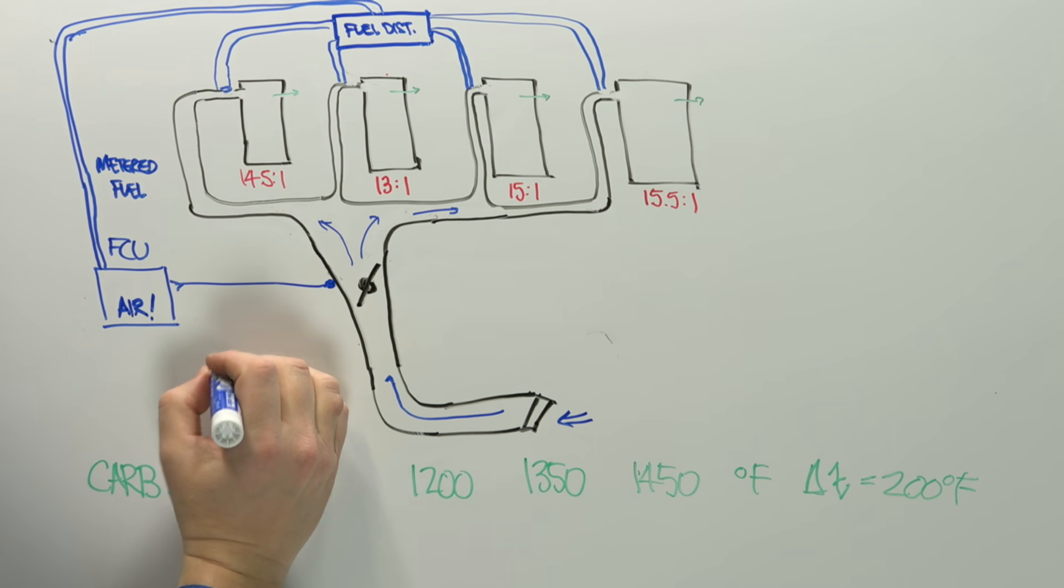So here's the fuel line, and this, of course, goes to the distributor. And then I've got the intake manifold like this going to the cylinder.